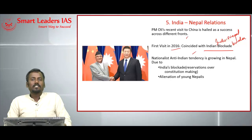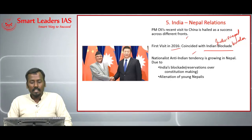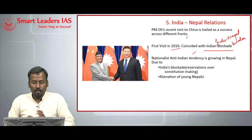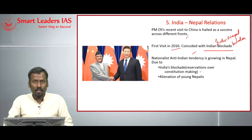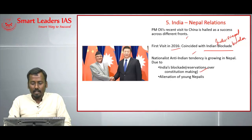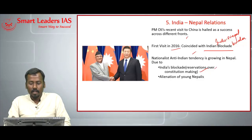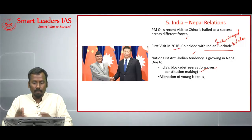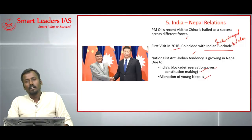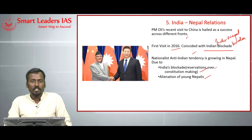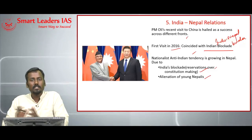The author says there is a growing nationalist anti-Indian tendency in Nepal, and gives two factors for this. First, India's blockade marked an epoch in India-Nepal relations along with Indian reservations over Nepal's constitution-making process. India had certain reservations over constitution making, and Nepalis believe India blockaded trade routes because of that. Second, the alienation of young Nepalis — earlier they used to study in India, but now they have found alternative destinations for education.